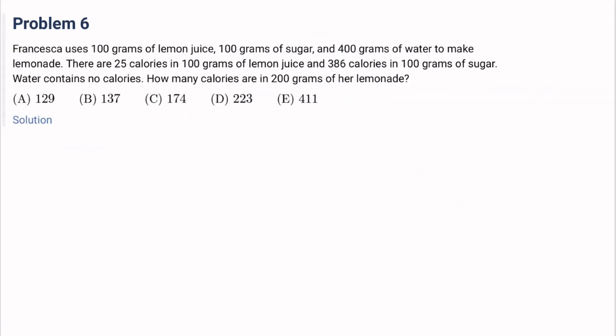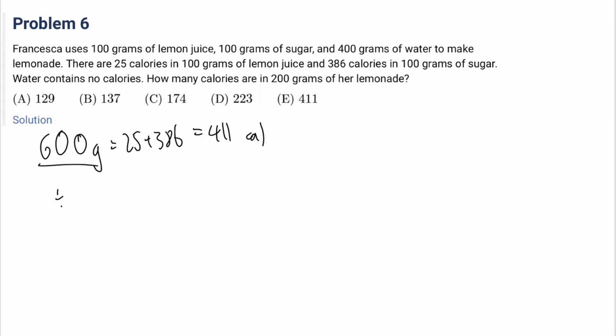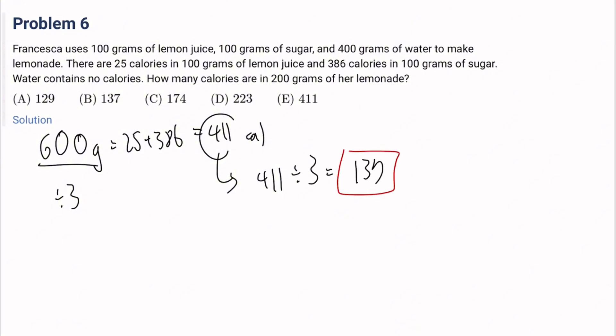Number 6: Francesca used 100 grams of lemon juice, 100 grams of sugar, and 400 grams of water to make lemonade. There are 25 calories in 100 grams of lemon juice and 386 calories in 100 grams of sugar. Water has no calories. How many calories are in 200 grams of lemonade? Altogether that's 600 grams with 411 calories. In 200 grams, that's 411 divided by 3, which is 137 calories. It's B.